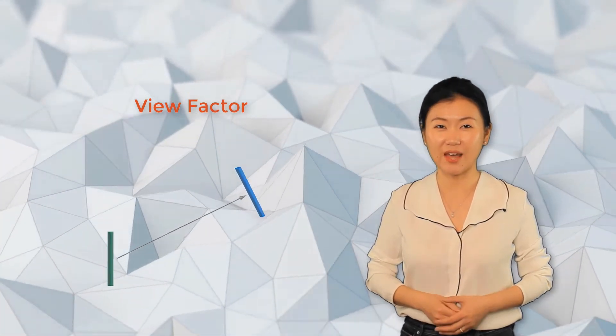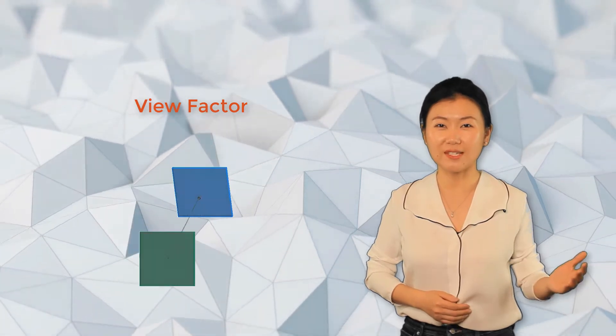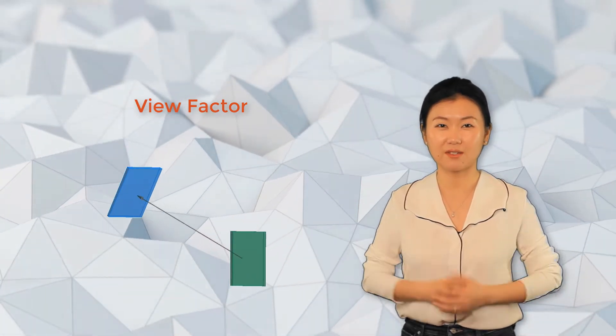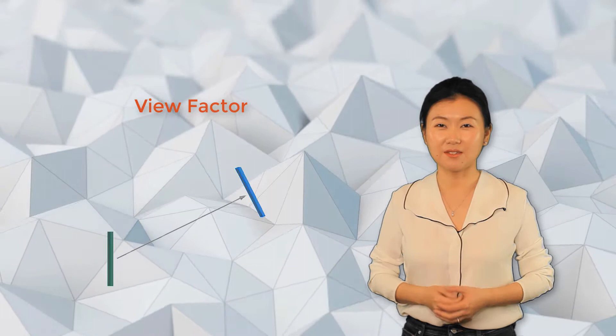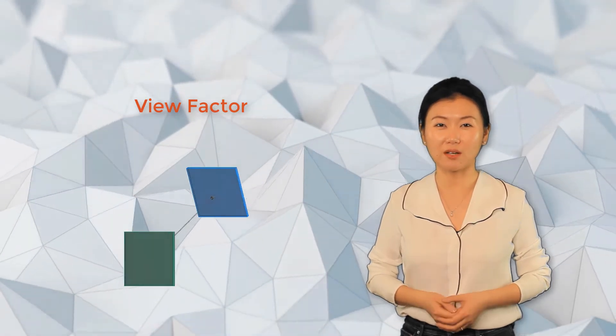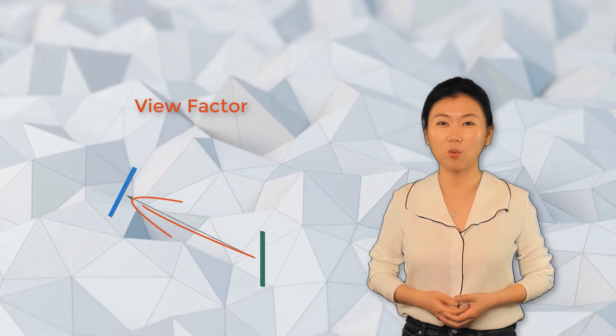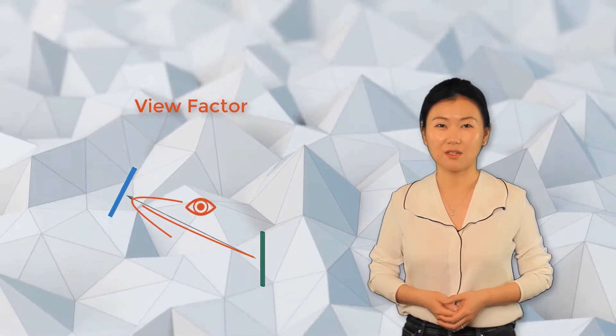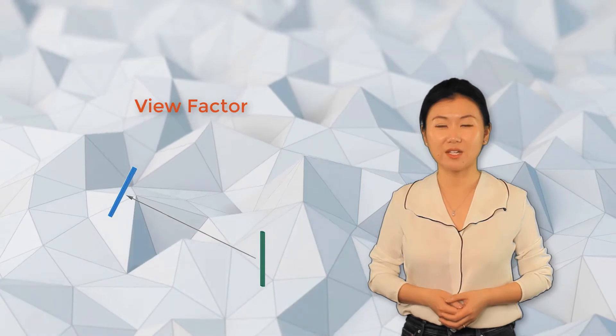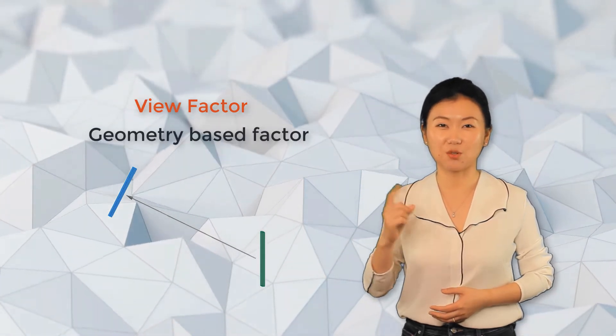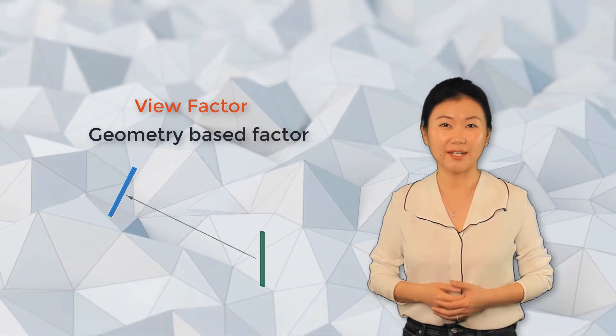the portion of the radiative heat flux which leaves one surface that strikes another surface. In fact, you can consider it as a very straightforward concept. Just think of it as a factor to measure how well one surface can see another surface. It is worth pointing out that view factor is purely based on geometry. It's not related to any physical surface property or temperature.